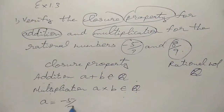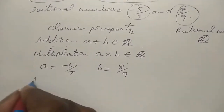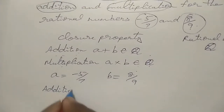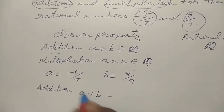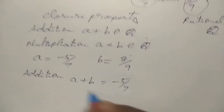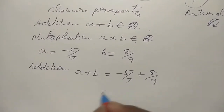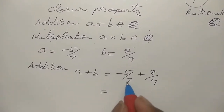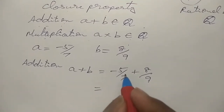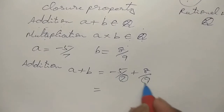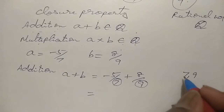So a is equal to minus 5 by 7, and b value is 8 by 9. First we check for addition. So a plus b means minus 5 by 7 plus 8 by 9. We have to add both fractions. Let me check the denominators — they are 7 and 9. Since 7 and 9 are not the same, we have to go with the LCM.